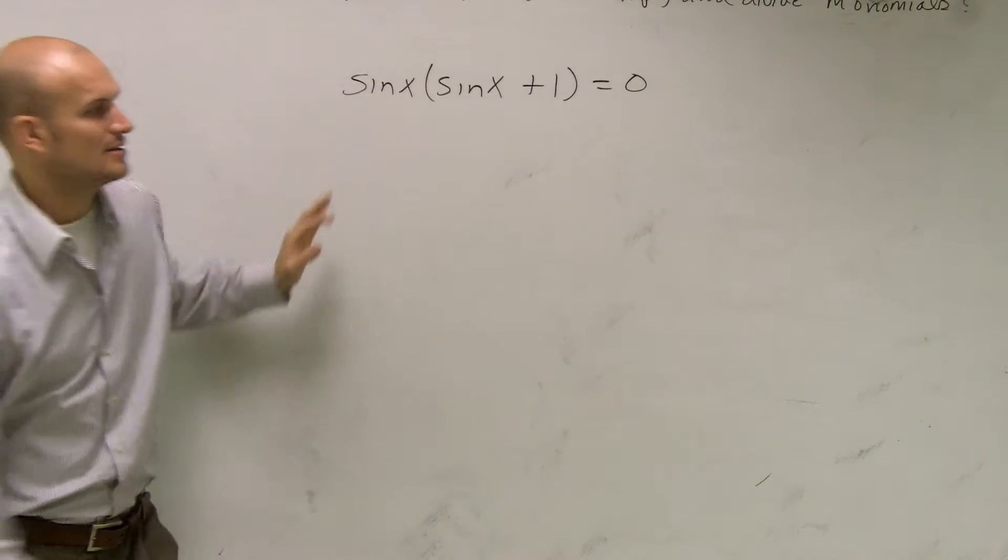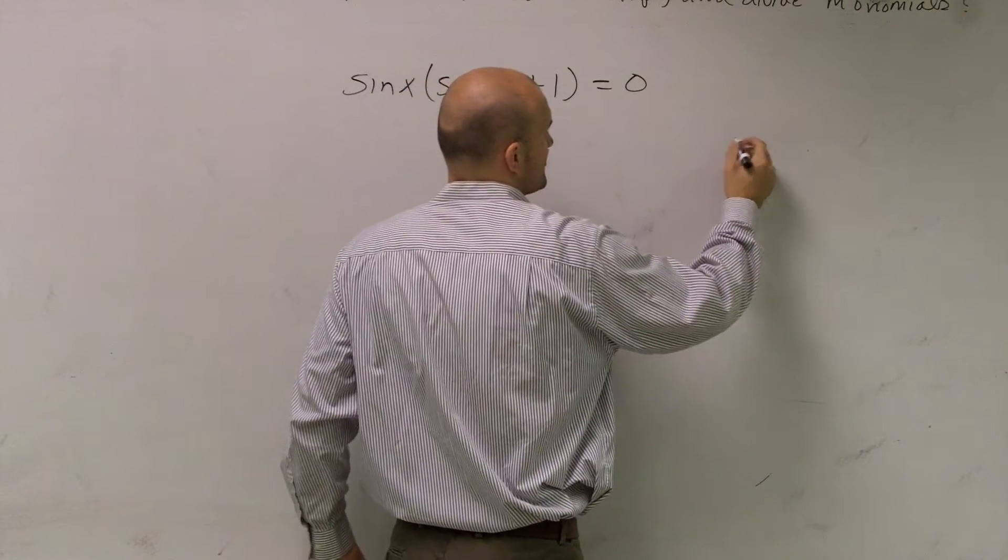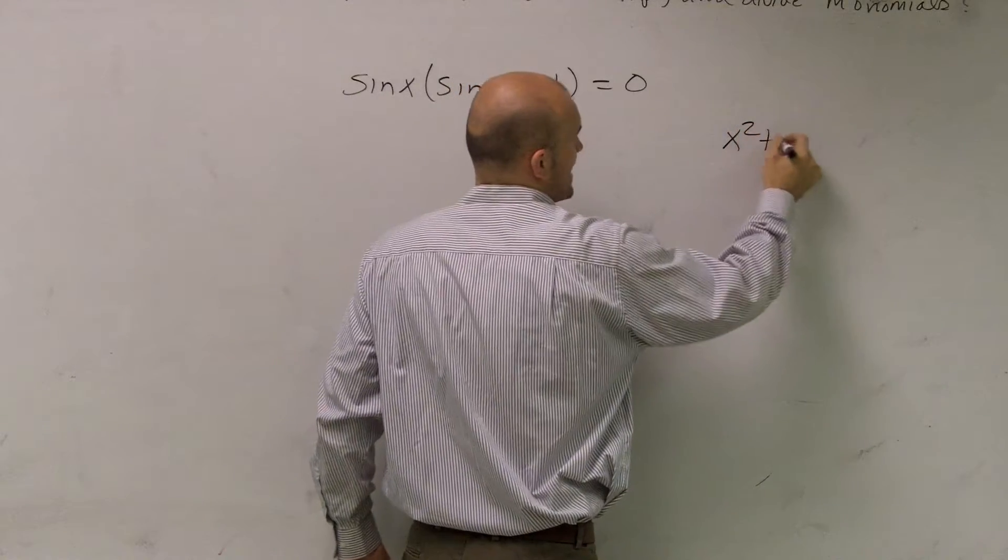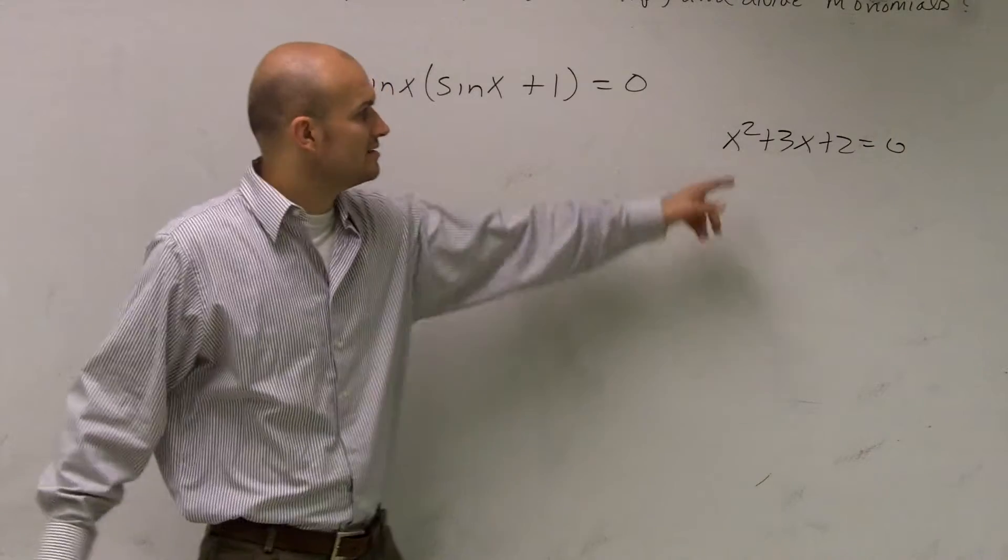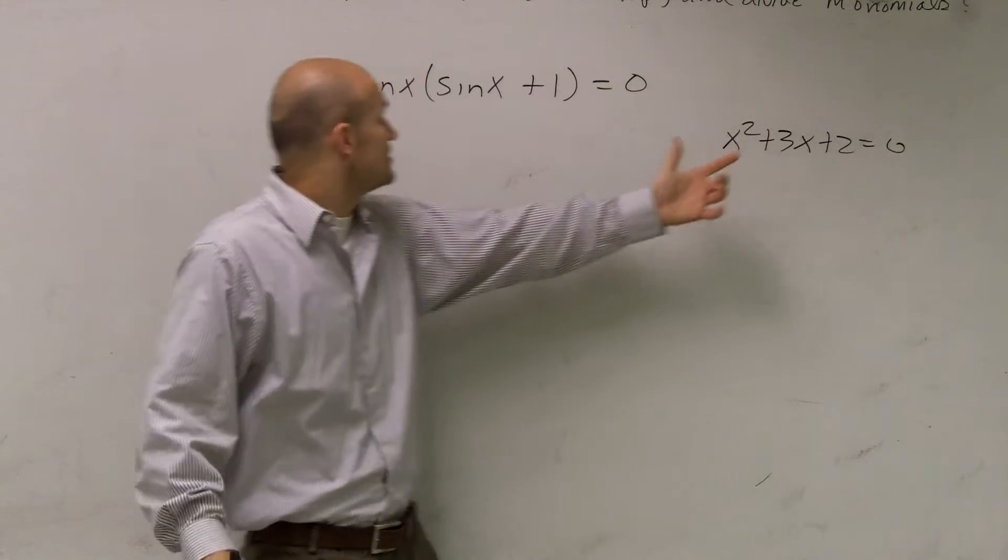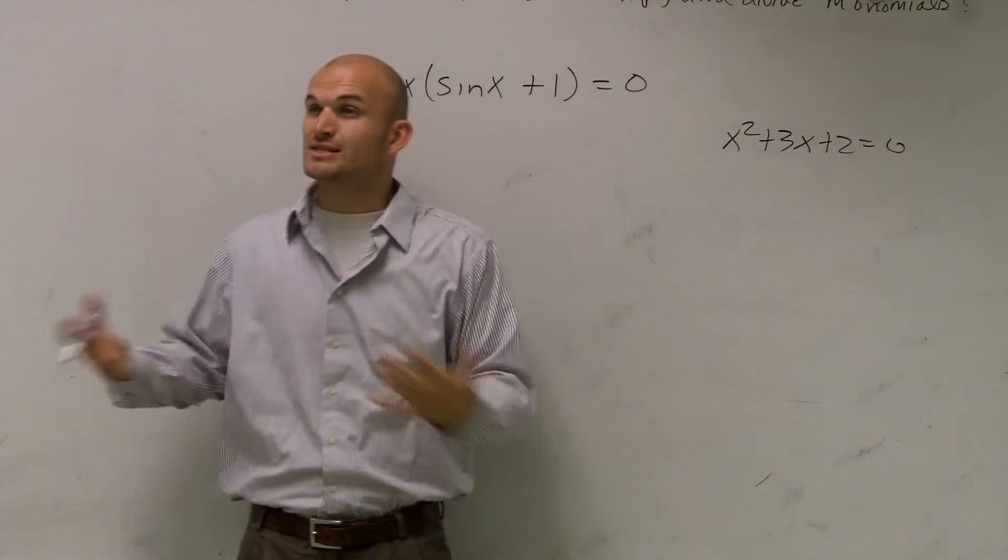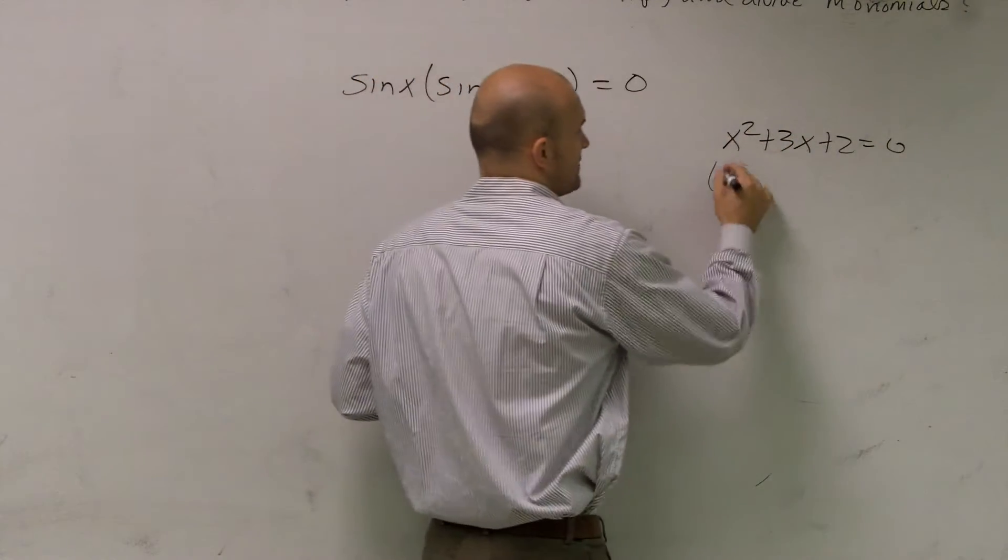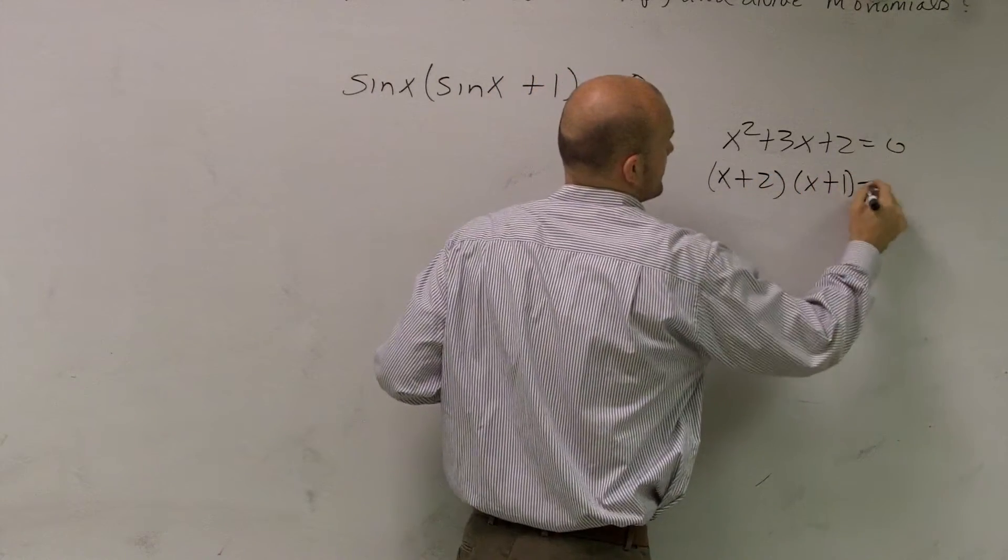So remember, if I have something like factoring, and I've gone through this over and over, but when we have more than one x on the same side and you have to look at some kind of factoring term, we're using the zero product property. Here, I factor this to (x+2)(x+1) = 0.